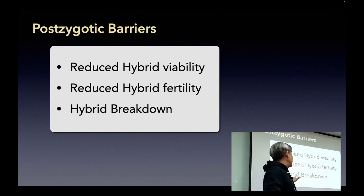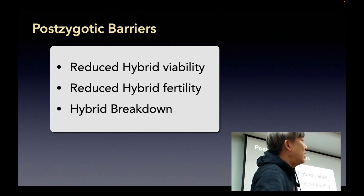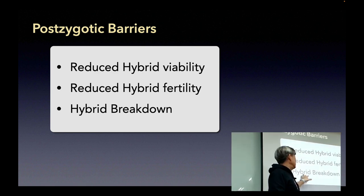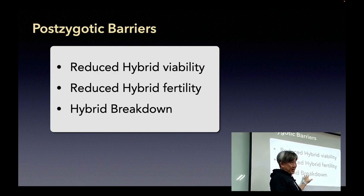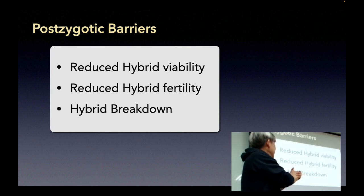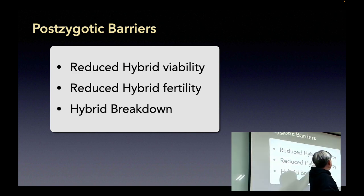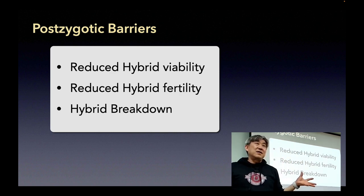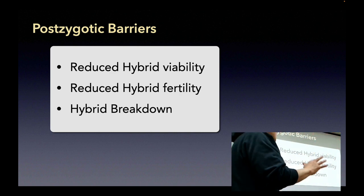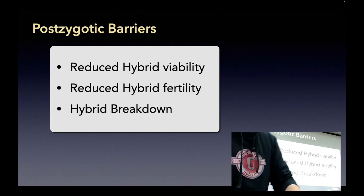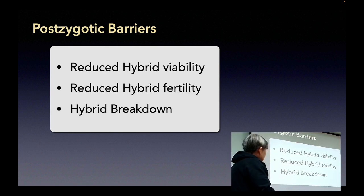Something called hybrid breakdown is not really common in animals but more common in the plant field, in crop fields. Once you have this hybrid, the breakdown is not obviously a viability or fertility problem but has some other ambiguous problems. This hybrid cannot really survive very well, and that's what we categorize as hybrid breakdown.